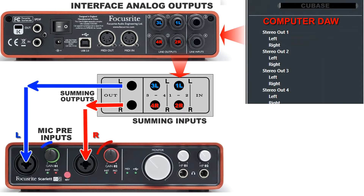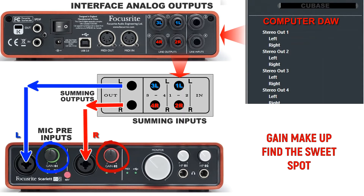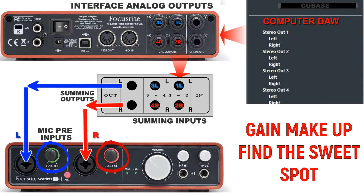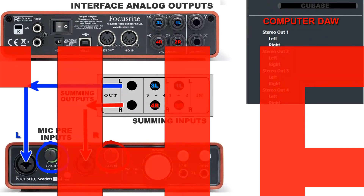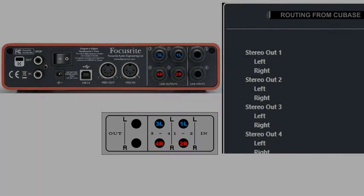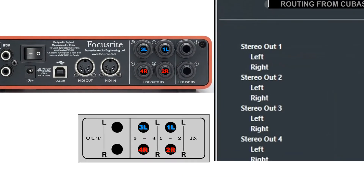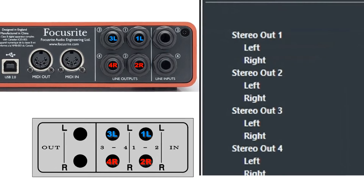Finally, send the master stereo return back to the DAW interface for gain makeup. Set the proper volumes on your mic preamps and find the sweet spot.